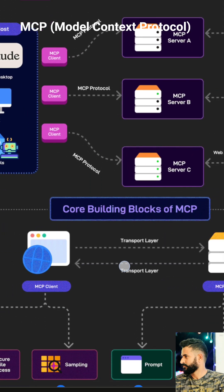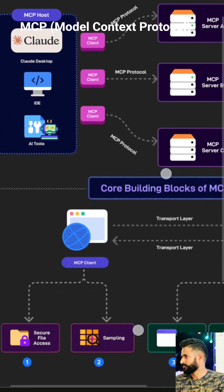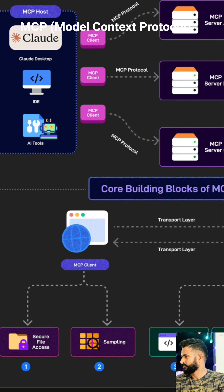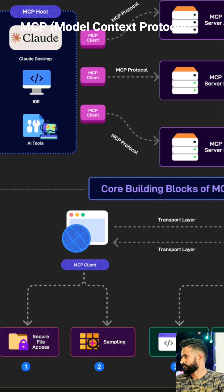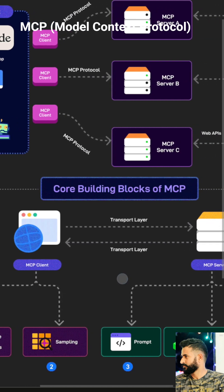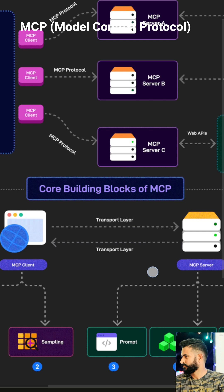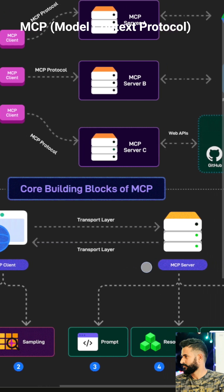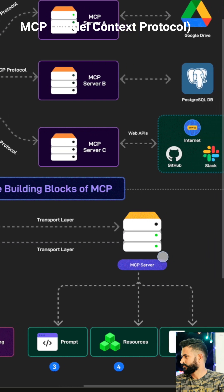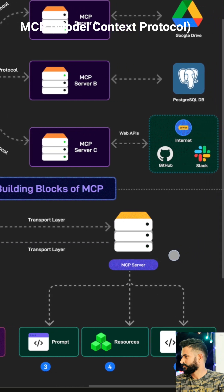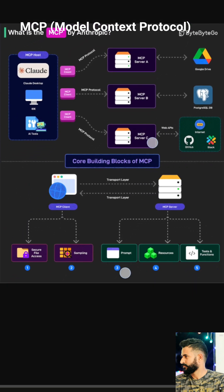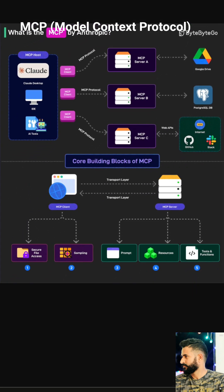So how does it all work? You give Claude a prompt on your desktop. The MCP client sends a request to the appropriate MCP server using the MCP protocol. The server accesses the necessary resources and tools and sends the results back to Claude, which then uses this information to generate a response. MCP is a powerful framework that allows AI models like Claude to break free from their limitations and interact with the real world — a step towards building more capable and versatile AI assistants. What exciting applications of MCP can you imagine? Let's discuss in the comments below.